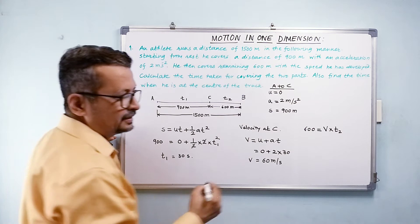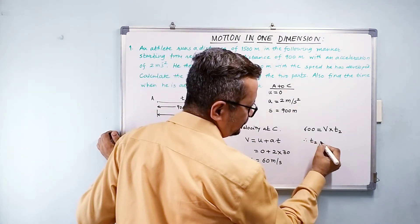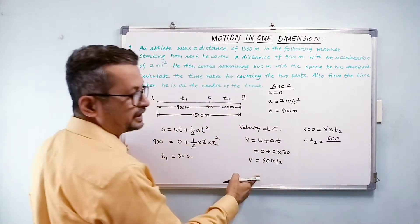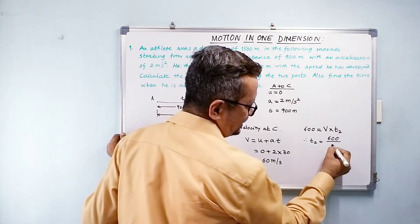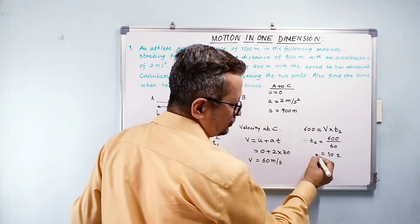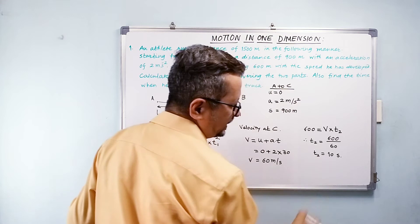Therefore, my t2 is equal to 600 upon, what is my velocity? Is it not 60 here? So that is equal to 10 seconds. So my t2 equals 10 seconds.